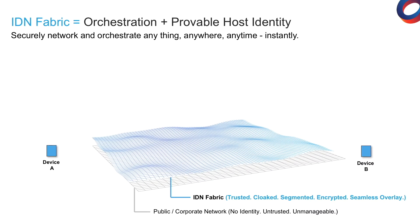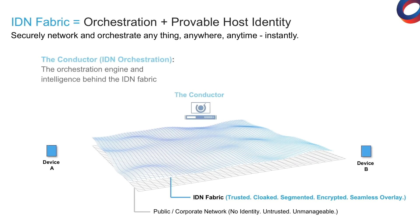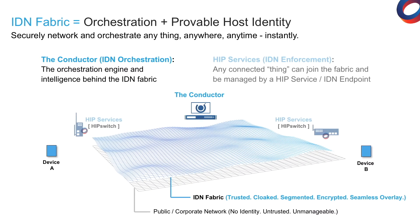The IDN fabric itself is made up of two components. The conductor, which provides centralized control of the fabric, and HIP services, that are deployed together with any resource you are protecting and can function as identity enforcement endpoints.